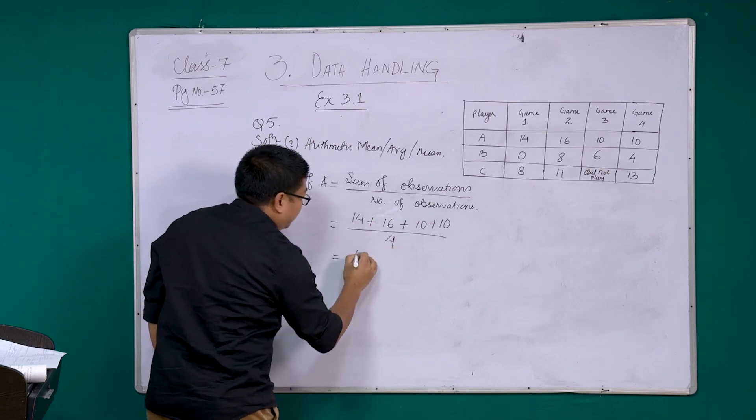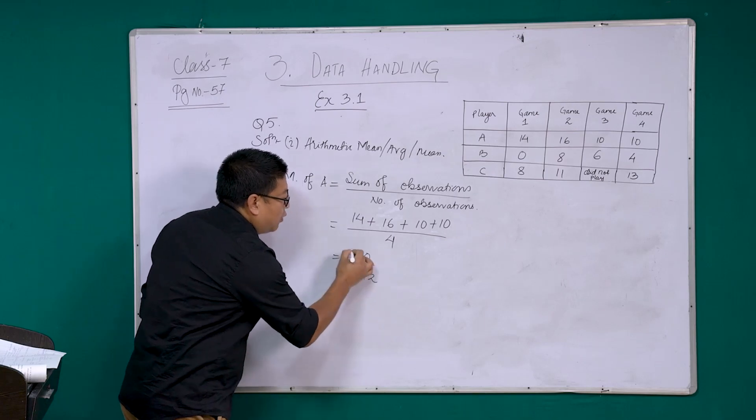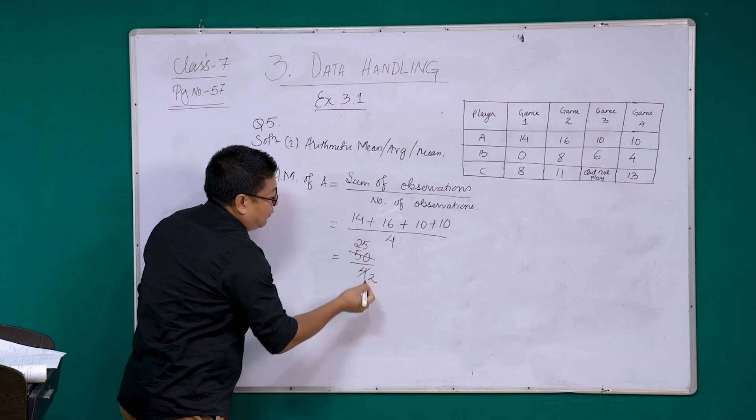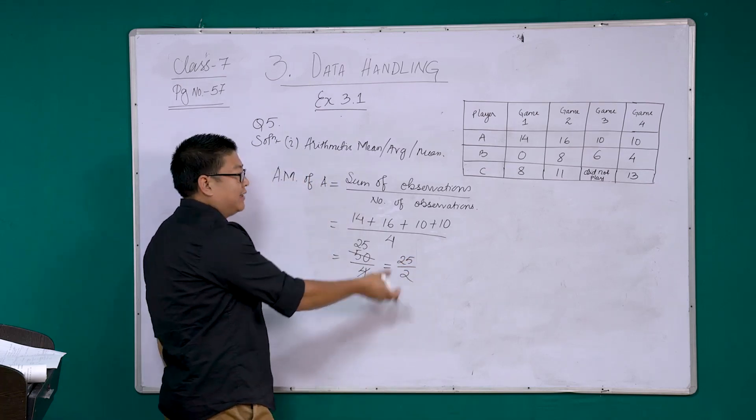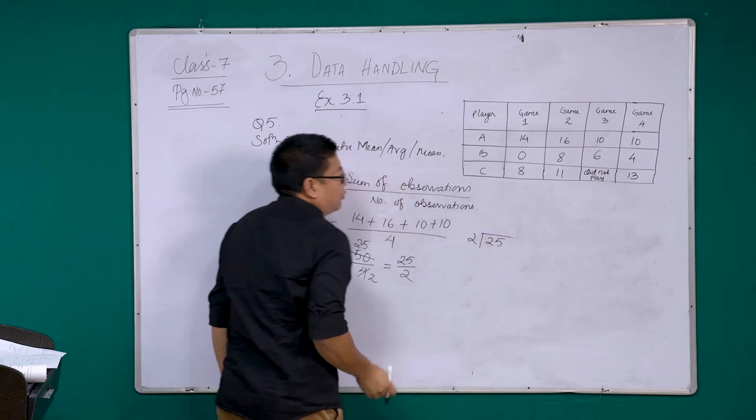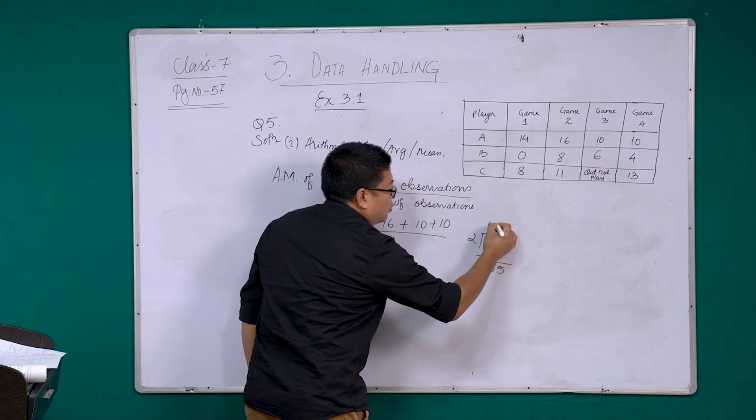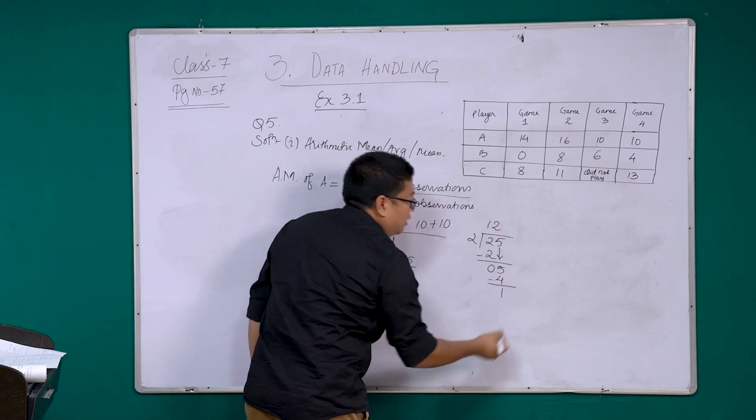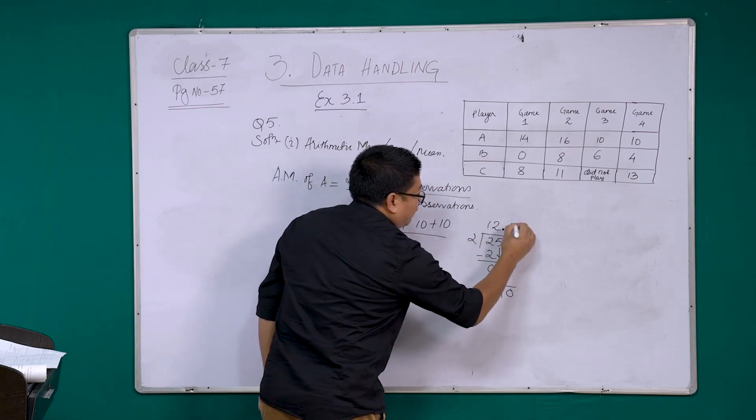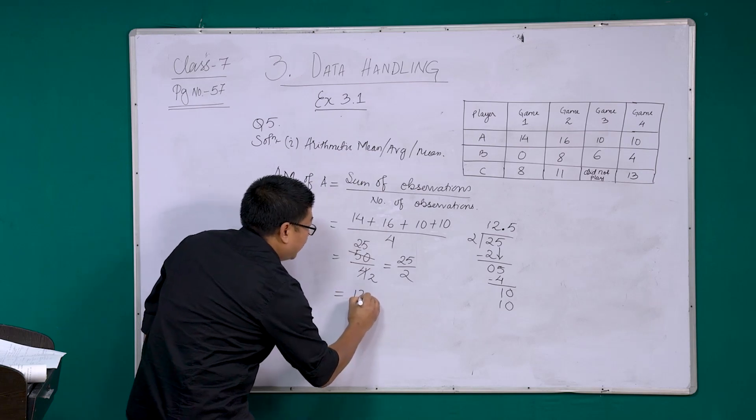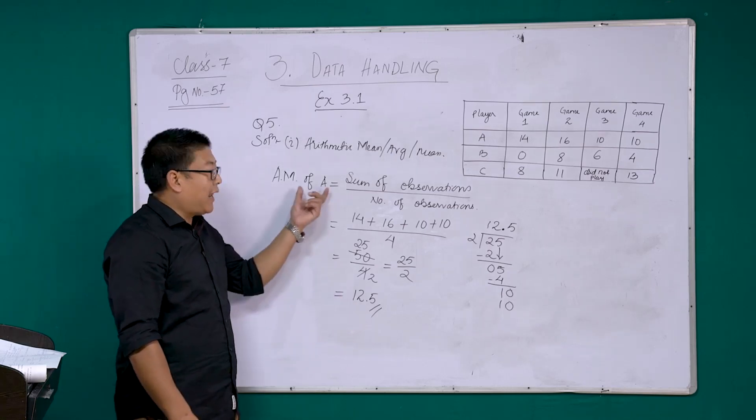So we are going to add them all together, 14 plus 16 plus 10 plus 10. And number of observations are 1, 2, 3, and 4. So we are going to divide by 4. So when you add them, we get 50 by 4. So we can further cancel it out. 2 into 2 is 4, 2 into 25 is 50. So we are going to write it as 25 by 2. Now we can further divide and bring it down. 2 divide 25, 2 into 1 is 2, remainder 1. We put a decimal point, bring down 0. 2 into 5 is 10. So in the final answer, we are getting 12.5. This is the average or the arithmetic mean of A, which is 12.5.